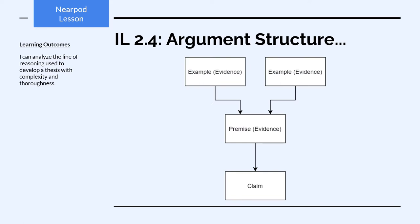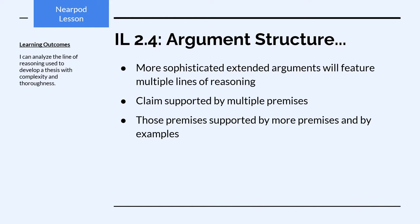For example, this very simple argument has just one line of reasoning. Our claim is supported by a single premise. That premise is supported by a couple of examples, but we would call this whole thing — the premise and the two examples — one line of reasoning. Of course, more sophisticated arguments, extended arguments within a lot of the texts we've read, are going to feature more than just one line of reasoning.